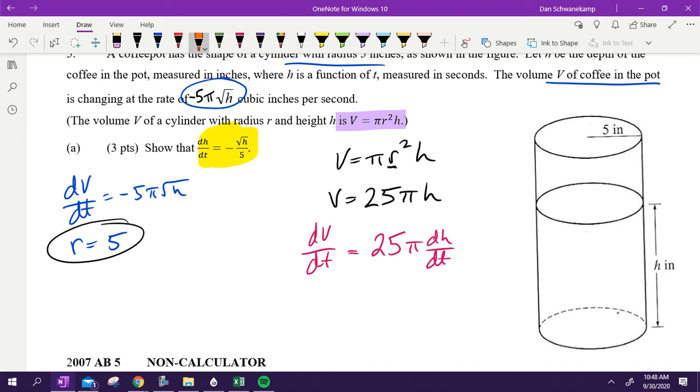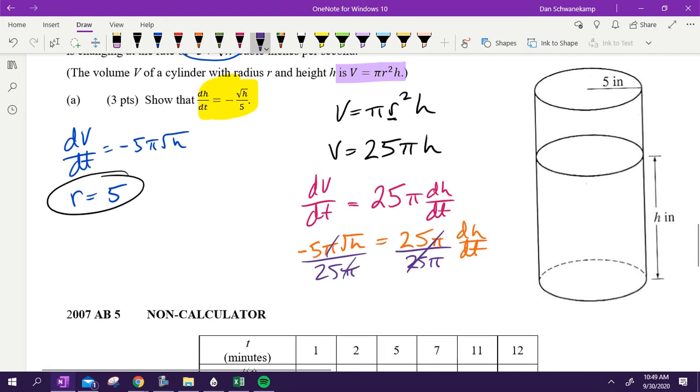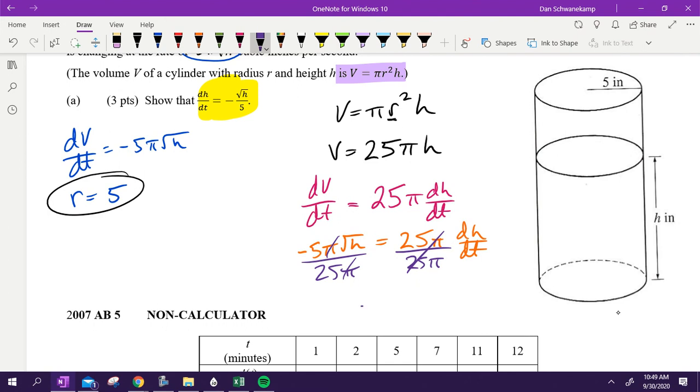Then we're going to solve. So we're going to plug in what we know. DV DT. That is negative 5 pi square root of H. Super ugly. But who cares? I'm getting DH DT by itself. So what do I need to do here? Divide by 25 pi. Divide by 25 pi. That's canceling. The pi's are canceling. And negative 5 divided by 25. Oh, that's negative square root of H. And 5 over 25 can reduce to 1 over 5. That is DH over DT. Well, guess what? That's what we were trying to show. So we did our job because we showed what it was.